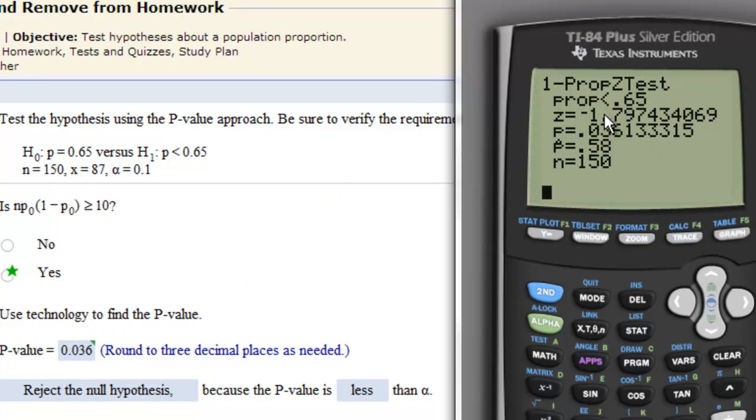This would be the z statistic if you needed that, but for the p-value it would be right here. Now we take that information and we compare it to the level of significance. So this p-value is less than this level of significance, so we reject the null hypothesis.